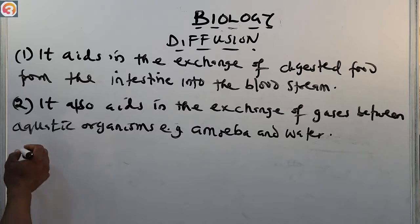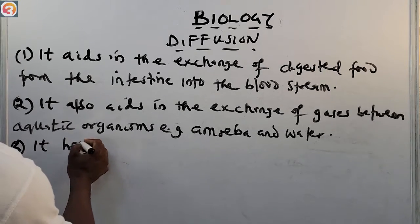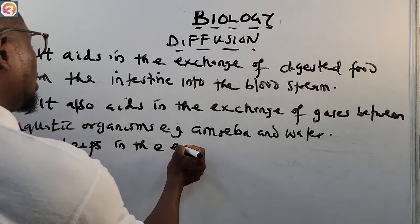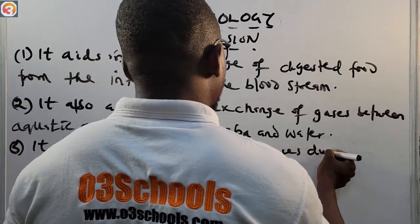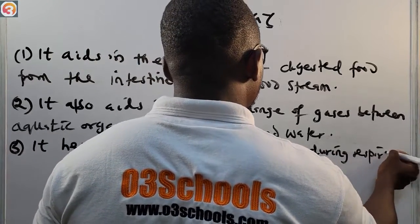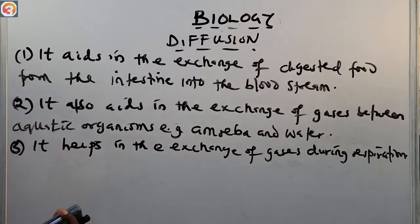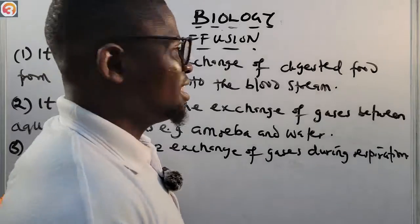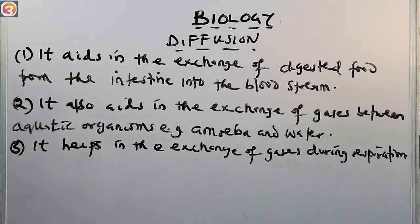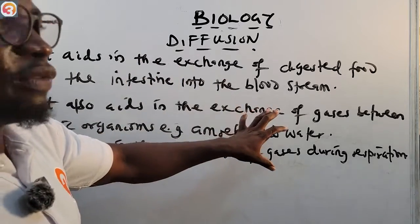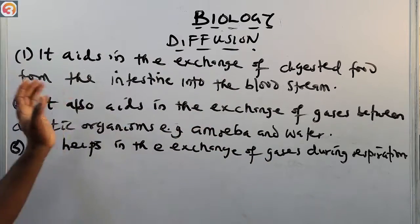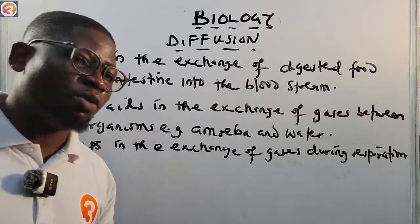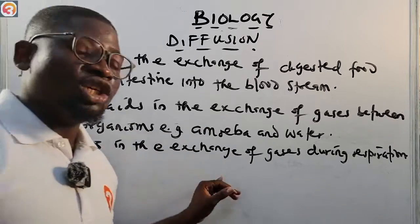Thirdly, diffusion also helps in the exchange of gases during respiration. So, to summarize: diffusion aids in the exchange of digested food from the intestine into the bloodstream; the exchange of gases between aquatic organisms like amoeba; and the exchange of gases during respiration.